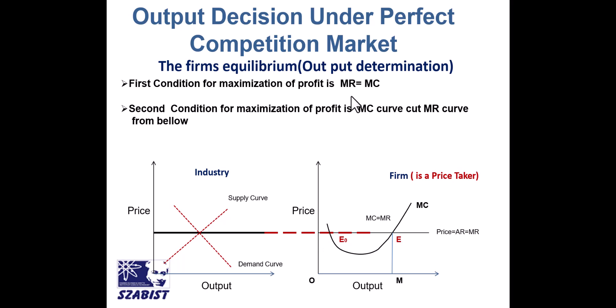There are two conditions for the output level decision: first, MR equals MC. As you can see in this graph, MC is cutting MR at two points — first point is here and the second point is here. The first condition is achieved at both of these two points — at both points MR equals MC.